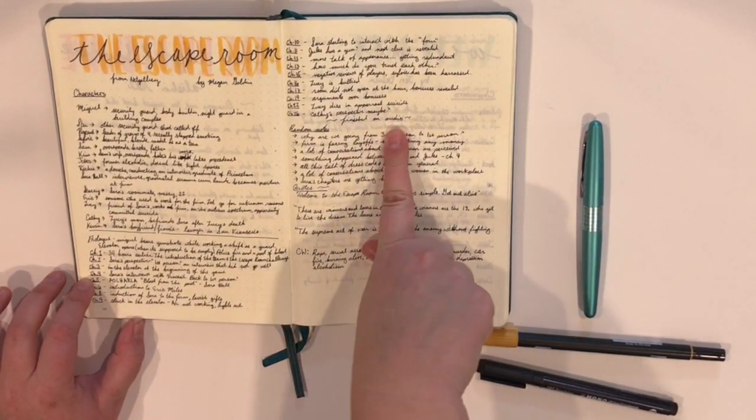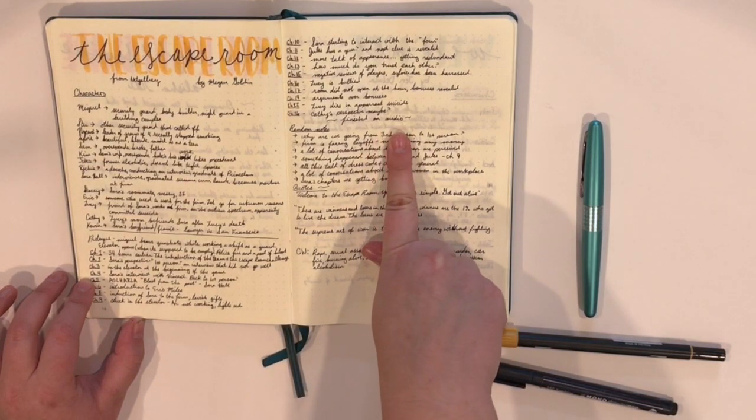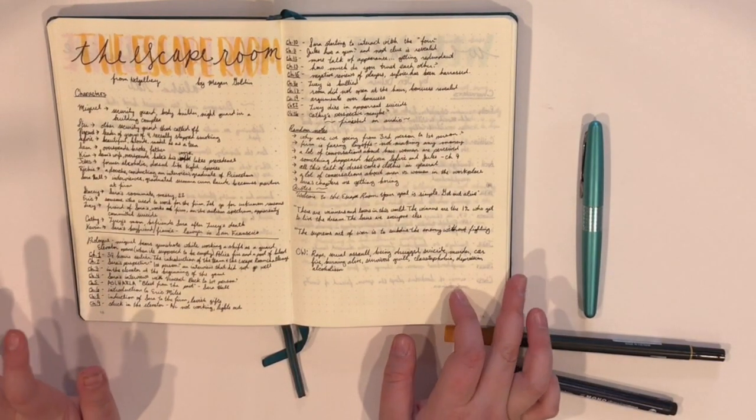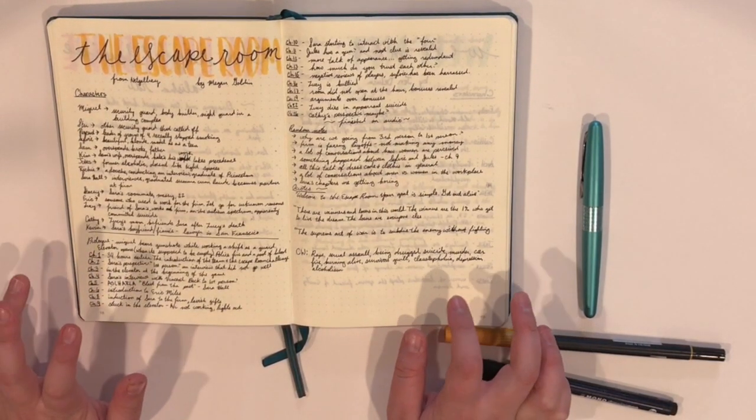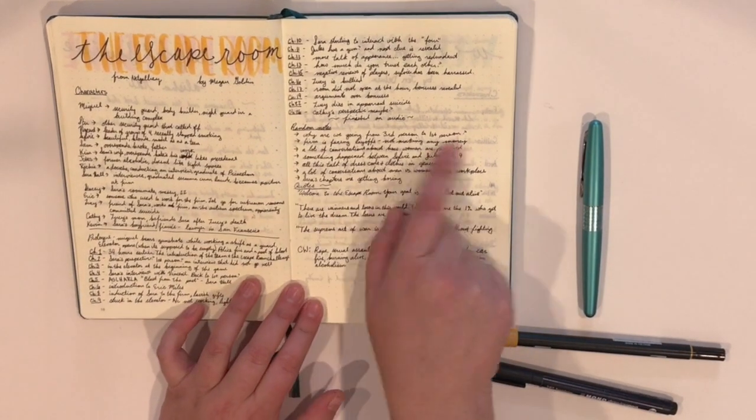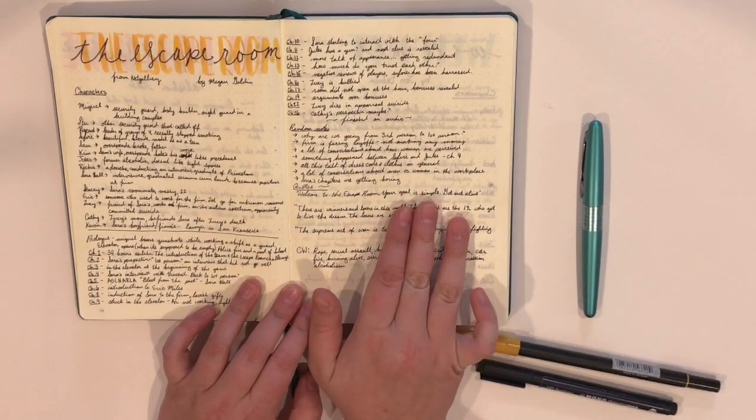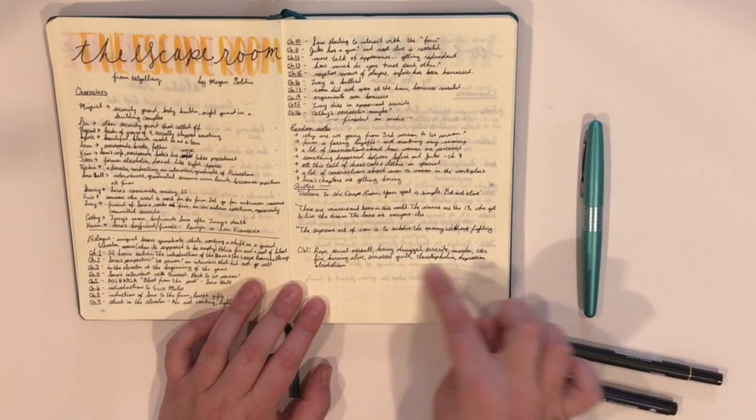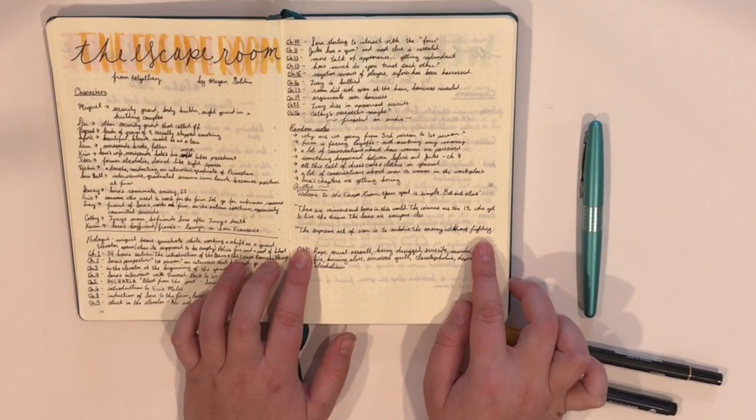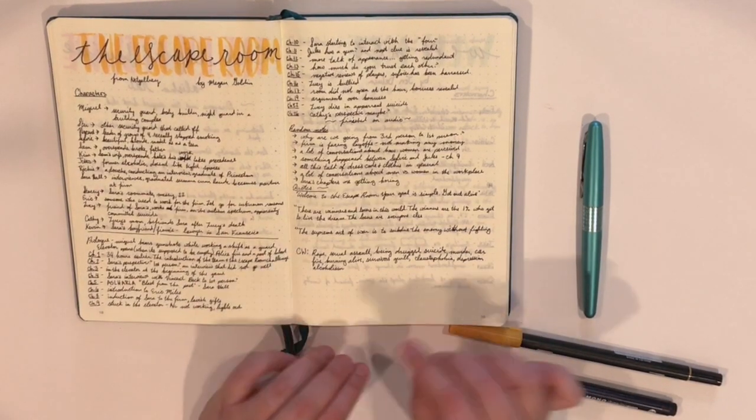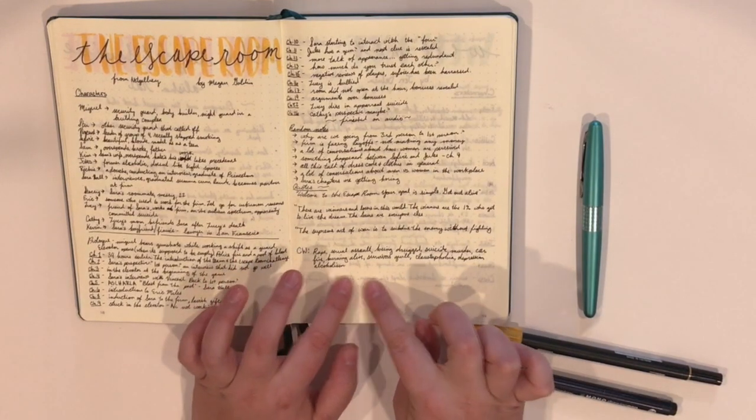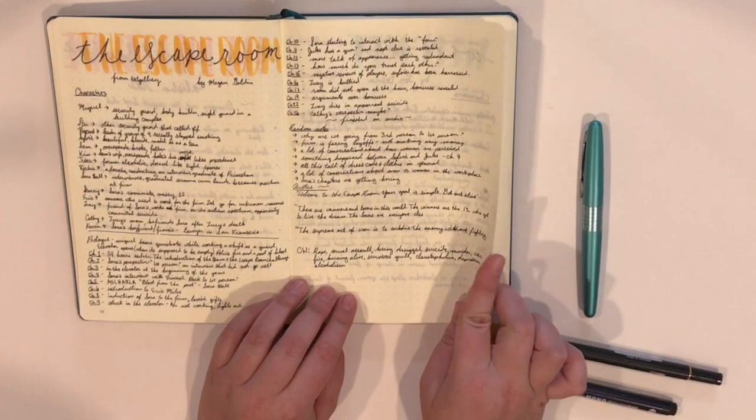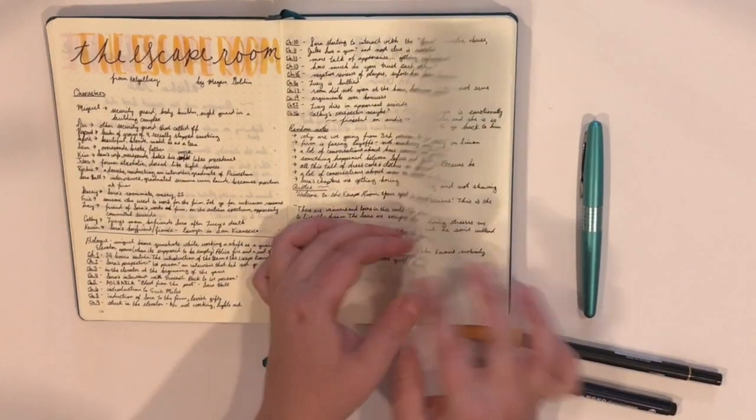And then I have a chapter breakdown. Now, I ended up finishing this book on audio, just because I wanted to get it finished. So, I wasn't able to make notes after chapter 26. It was two hours left of audio. But I had to go to work, and I wanted to finish it. And then I just have random notes. So, if I have a question about something, if I think that something might be a foreshadow, I put it in here. Then I have any type of quotes, anything that I want to put in my review. Then at the bottom, I put content warnings or trigger warnings, because I want to make sure that in my reviews, I'm doing that.